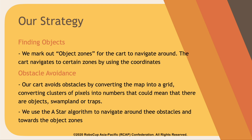For obstacle avoidance, our cart avoids obstacles by converting the map into a grid, which converts clusters of pixels into numbers. That could indicate whether there is an obstacle, a trap, or swamp land.